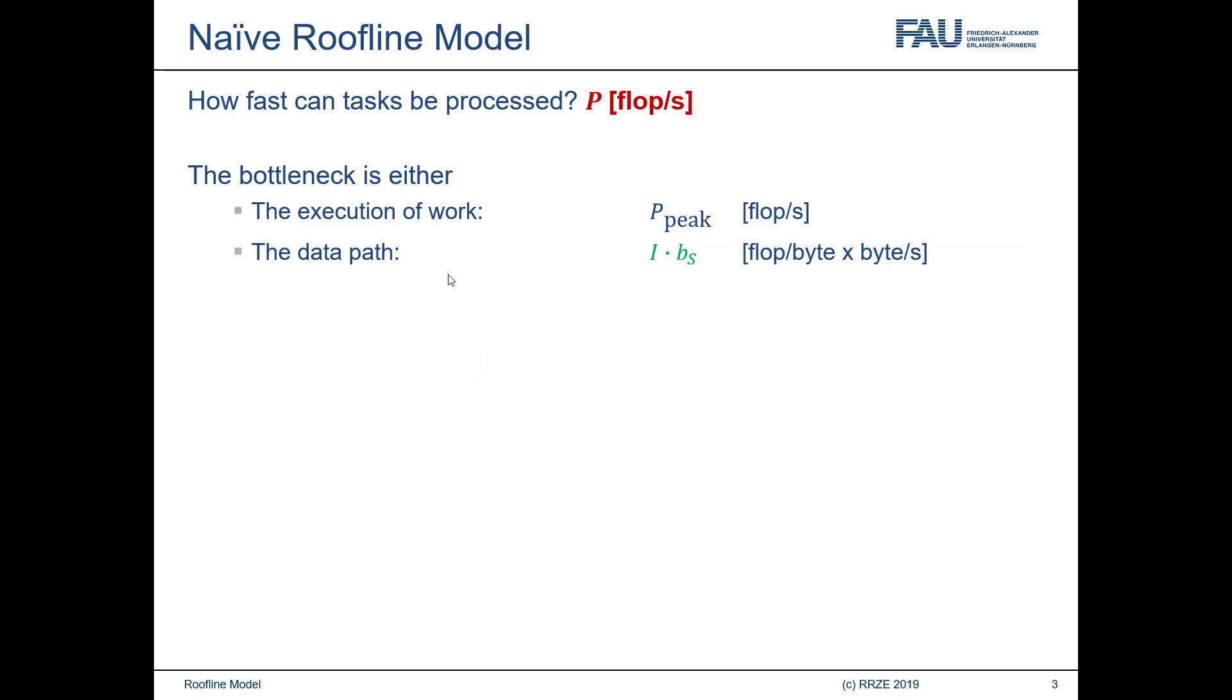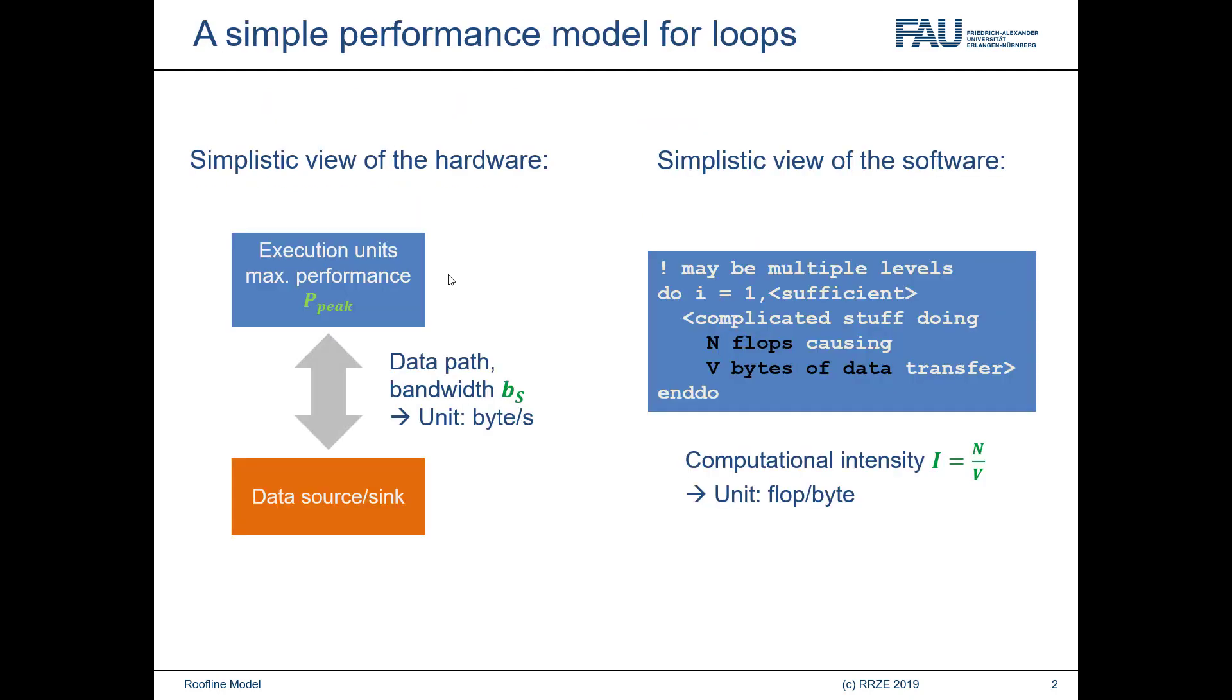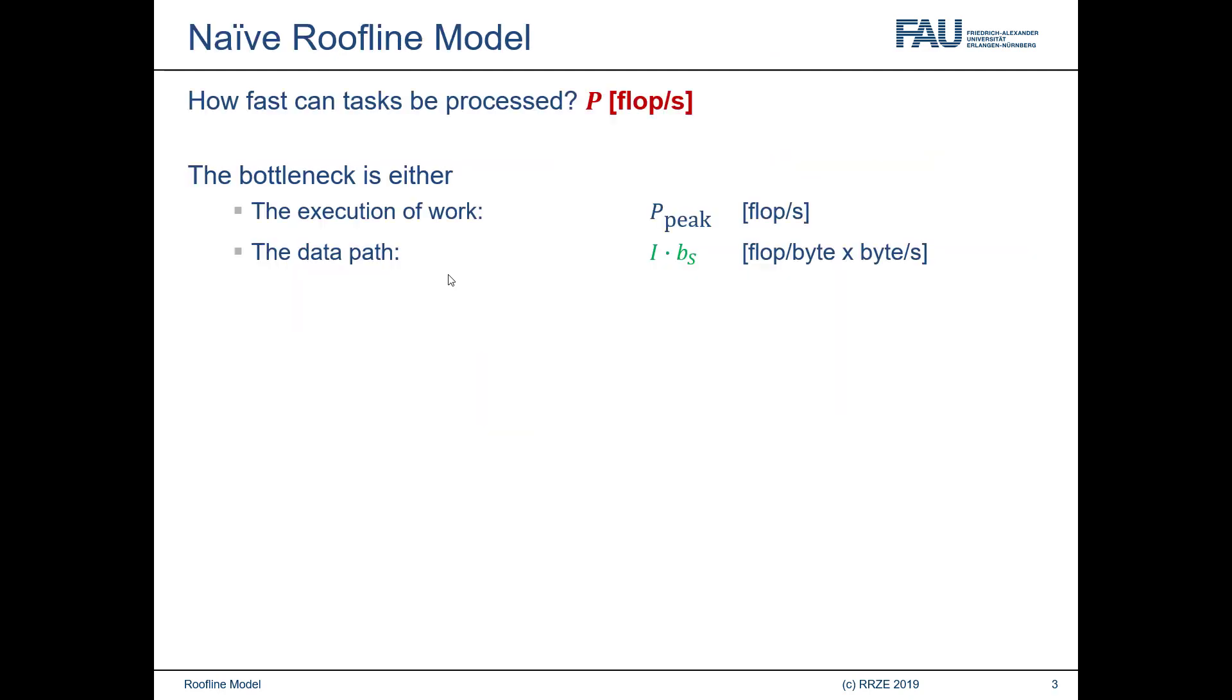Now, the main question that a performance model tries to answer is how fast can tasks be processed? What is the expected performance in flops per second? If we look back to the simplified view of the hardware, there are actually only two possible bottlenecks that may apply here. First bottleneck is the maximum number of flops that can be done by the hardware, which is limited by ppeak. And the second limit is the data path bandwidth in bytes per second, bs. So it's either one or the other.